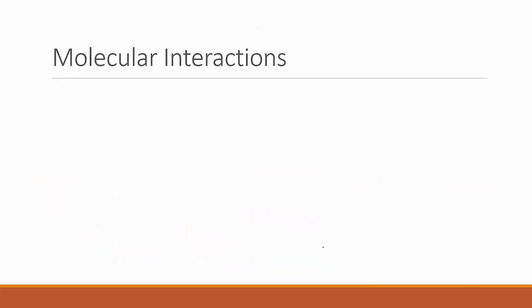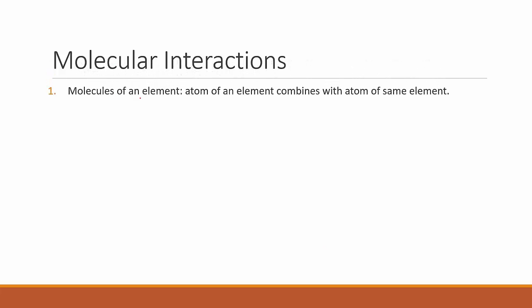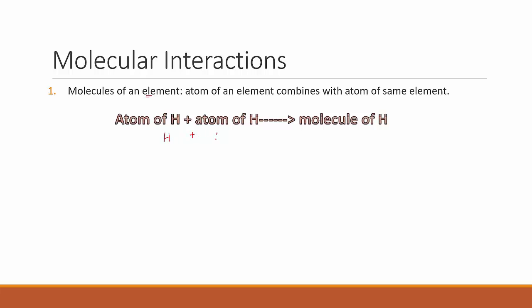Now let's see how molecules of elements are formed. One atom of one element will combine with another atom of the same element. For example, one atom of hydrogen combines with another atom of hydrogen to give a molecule of hydrogen, written as H2. Similarly, one atom of oxygen combining with another atom of oxygen gives a molecule of oxygen, O2.